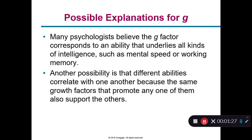Many psychologists believe in something called the G factor, which is an underlying, all-encompassing theory of intelligence. It's talking about mental speed, working memory, how much information you can process, your ability to take tests, your ability to engage in skills, spatial factors. Basically put everything together and call it the G factor — this idea of general intelligence, this underlying intelligence.